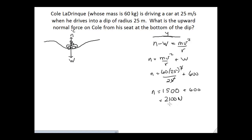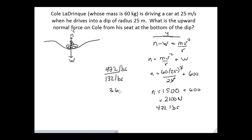So Cole, at the very bottom of the dip, experiences an upward force of 2100 Newtons. He feels heavier because he presses into the seat hard, and the seat presses back according to Newton's third law. Converting: 2100 N is about 472 pounds, while he normally weighs 132 pounds — so at that moment he feels 3.6 times heavier than normal.